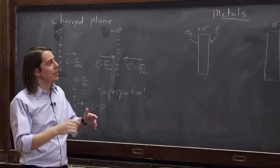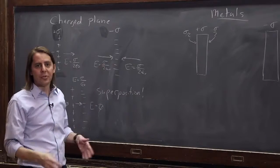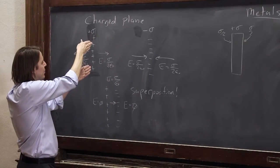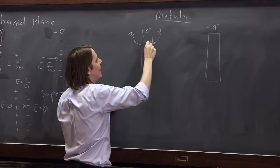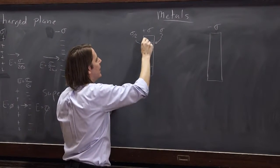Because we know in a metal, the charge will go all over the surface. So here we had all the sigma charged per unit meter squared in an infinitely thin plane. Here we have it in a metallic object, and half of it goes here, and half of it goes here.